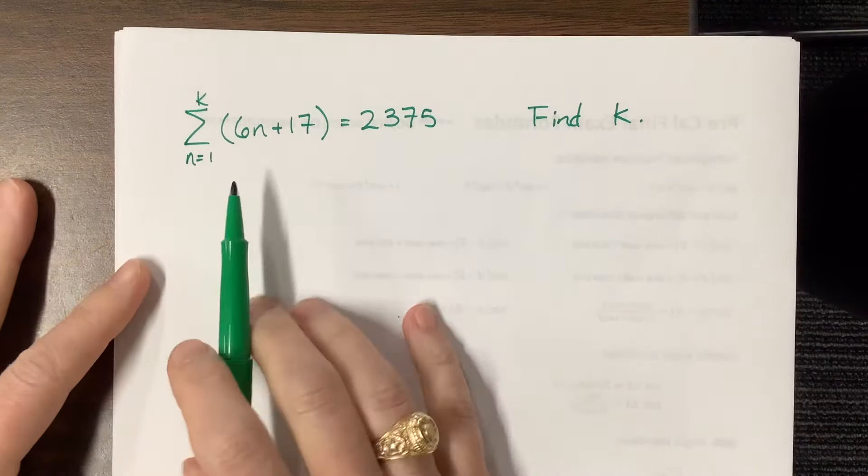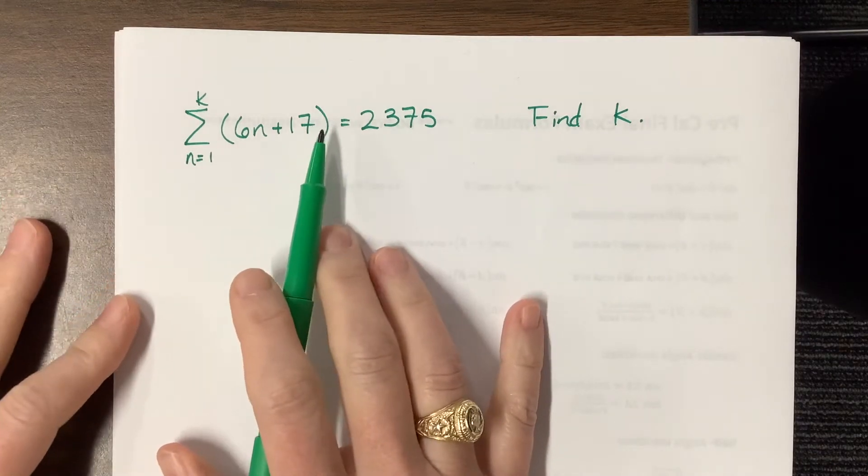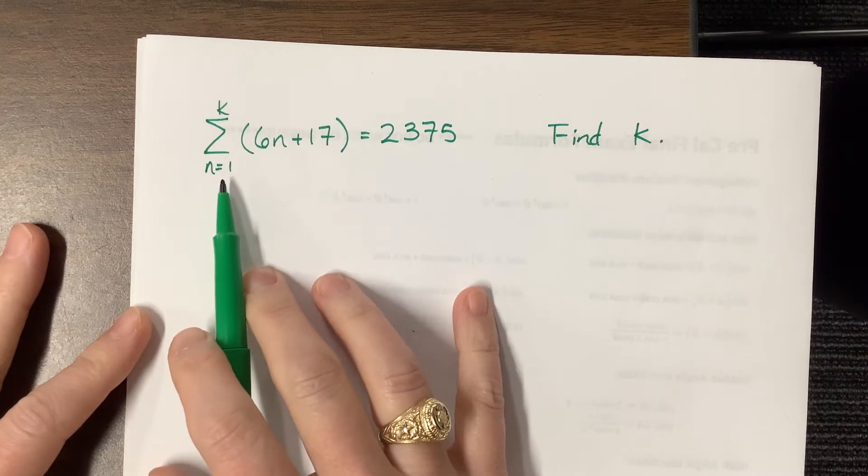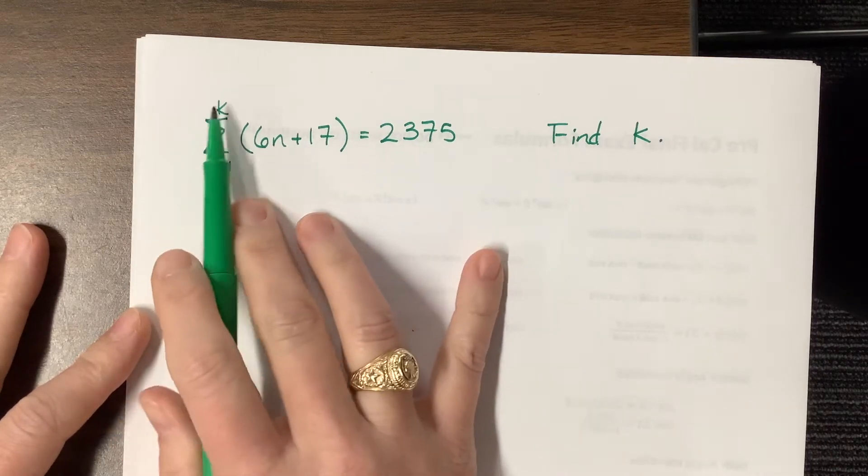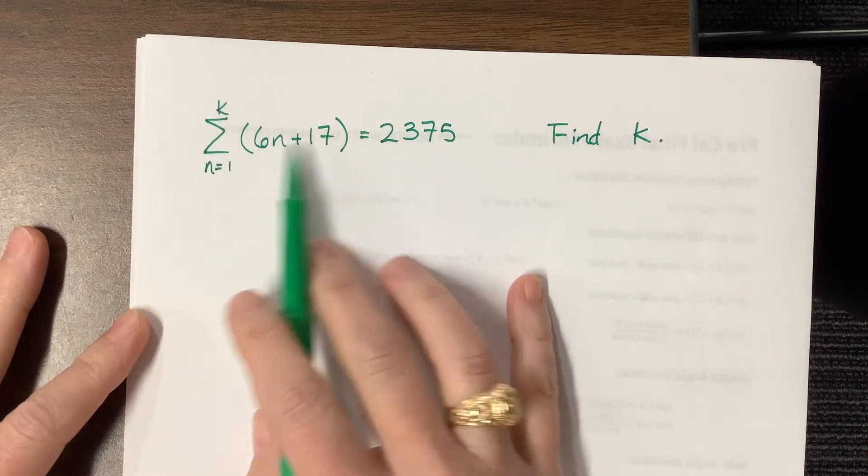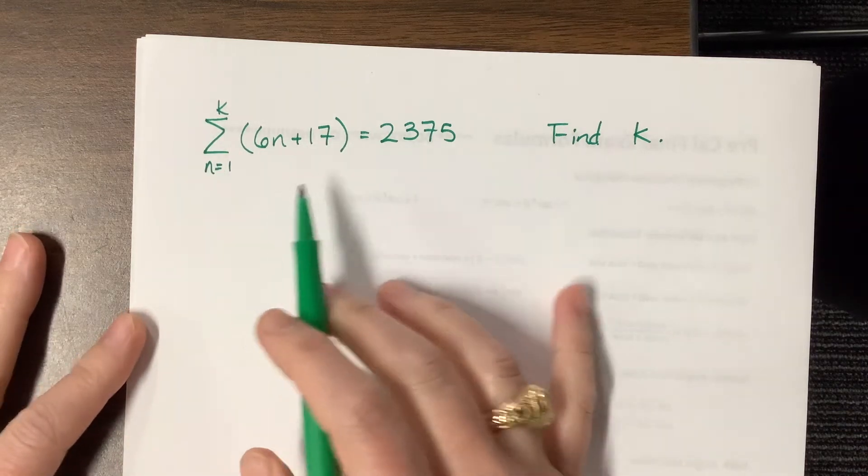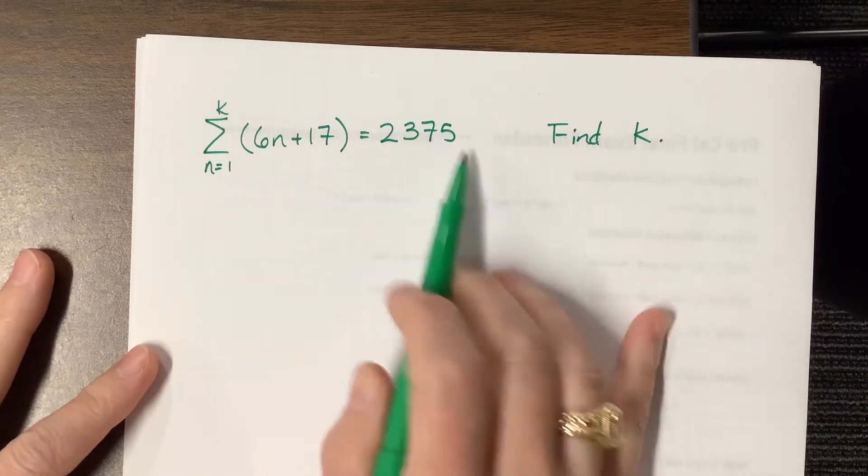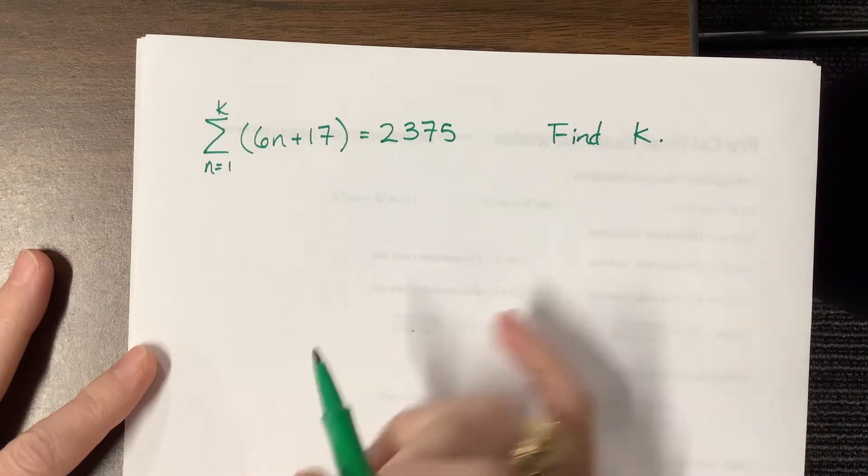So what they're telling us is that this is an arithmetic series, and they want the sum as n goes from 1 to some unknown value, some k value, of 6n plus 17. That's my birthday, 617. I like to use that. And we need to figure out how many terms does it take to get this sum of 2375.